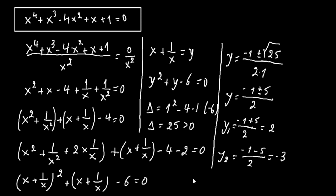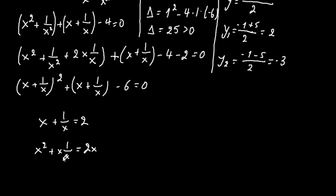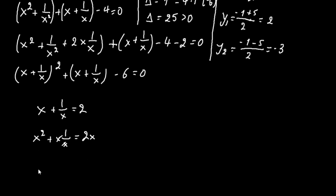For our first solution, we have x plus 1 over x equals 2. If we multiply both sides by x, we get x squared plus 1 equals 2x. Bringing 2x to the other side, this becomes x squared minus 2x plus 1 equals 0.